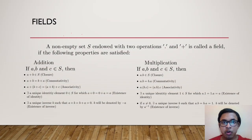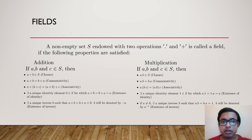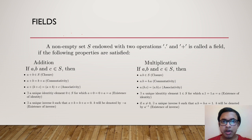Now we move on to abstract fields. What is a field? Suppose we have a non-empty set S on which there are two binary operations, dot and plus. By binary operation I mean a function from S×S to S. This set S will be called a field when certain properties are satisfied for addition and multiplication.